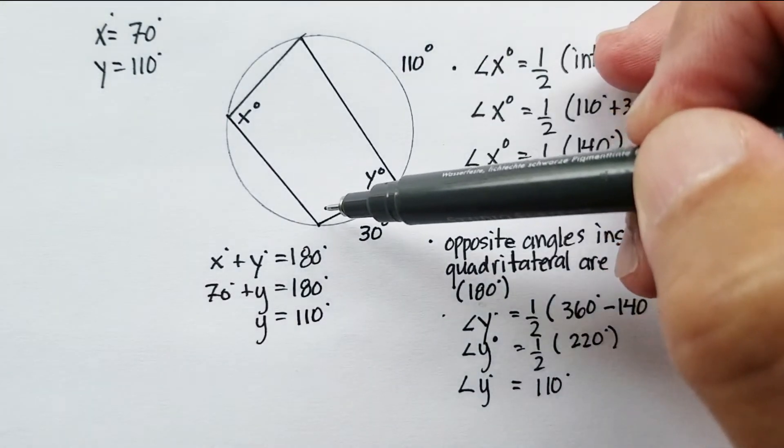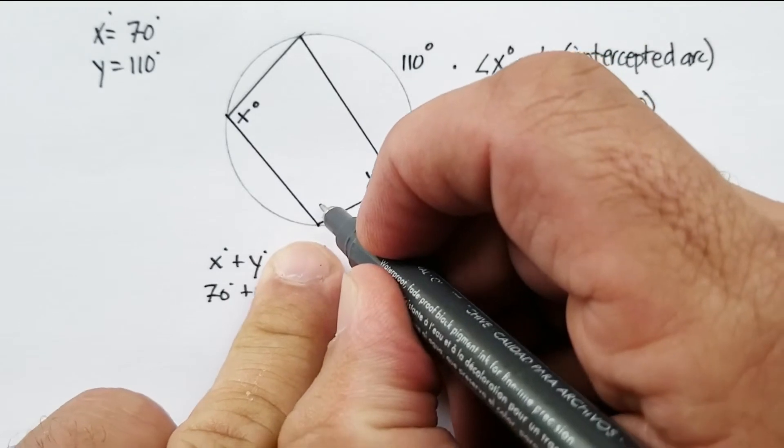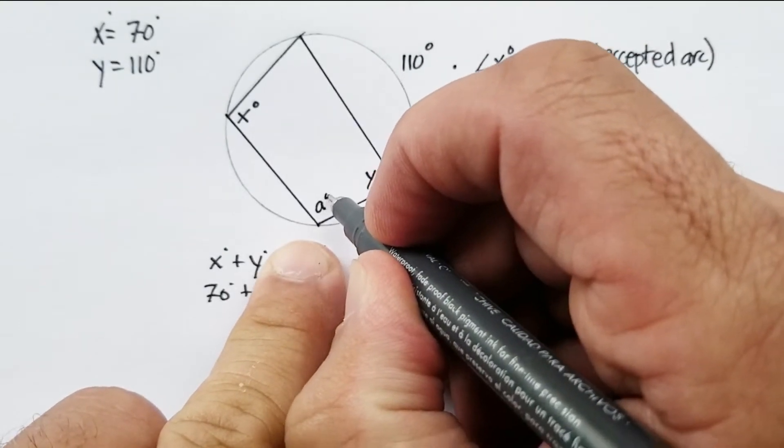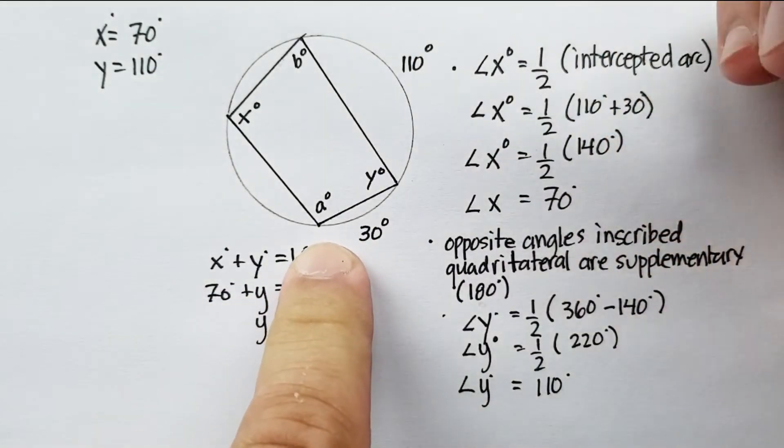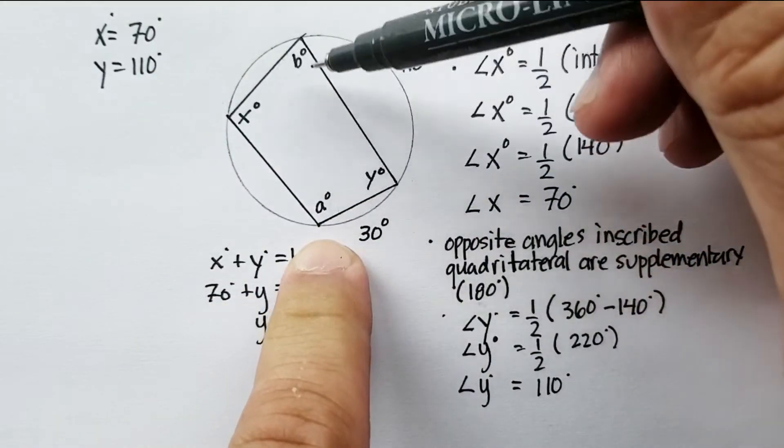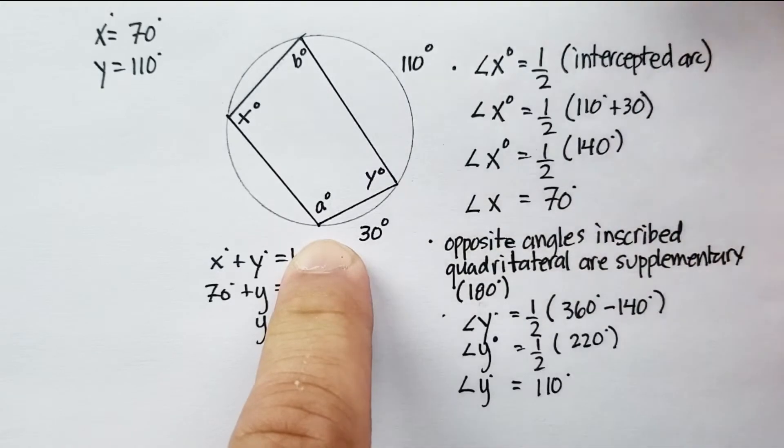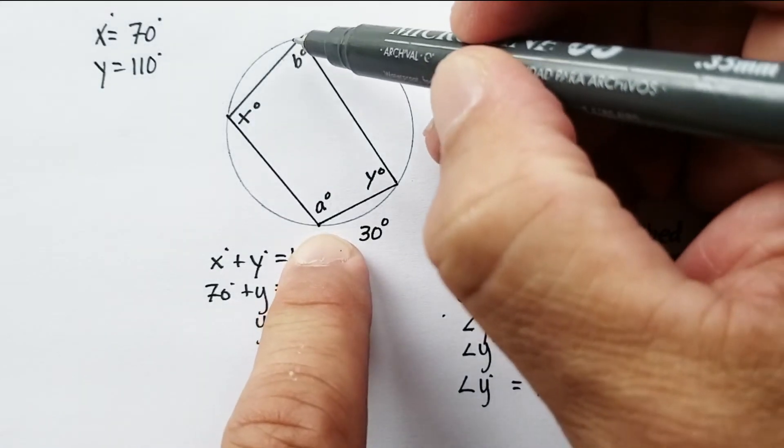Now, let's continue. Can we figure out this angle? So, let's just call this angle A, and let's call this angle B. Can we figure out what angle A and angle B are, just given the information that we have? It doesn't seem like it, does it?